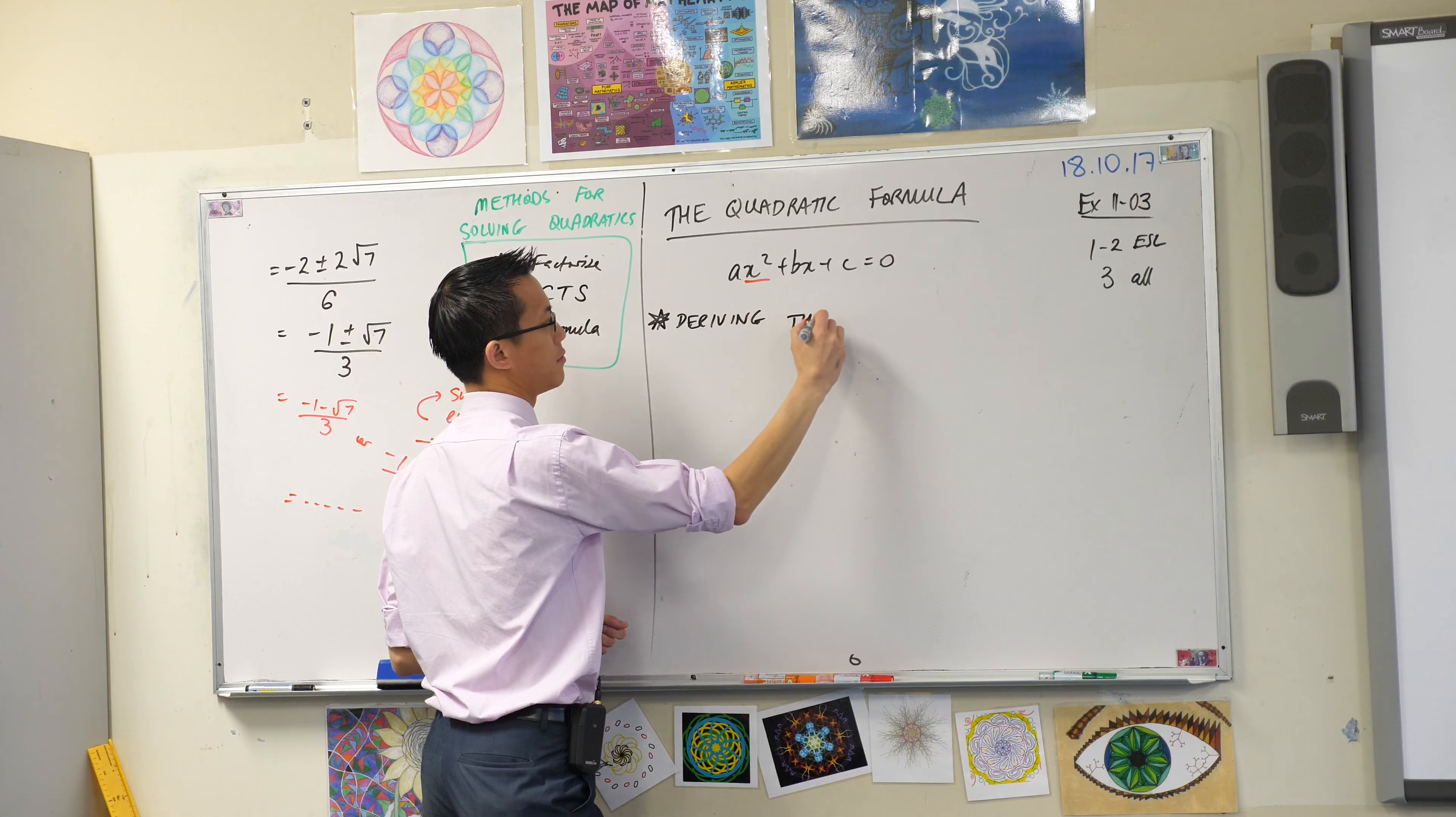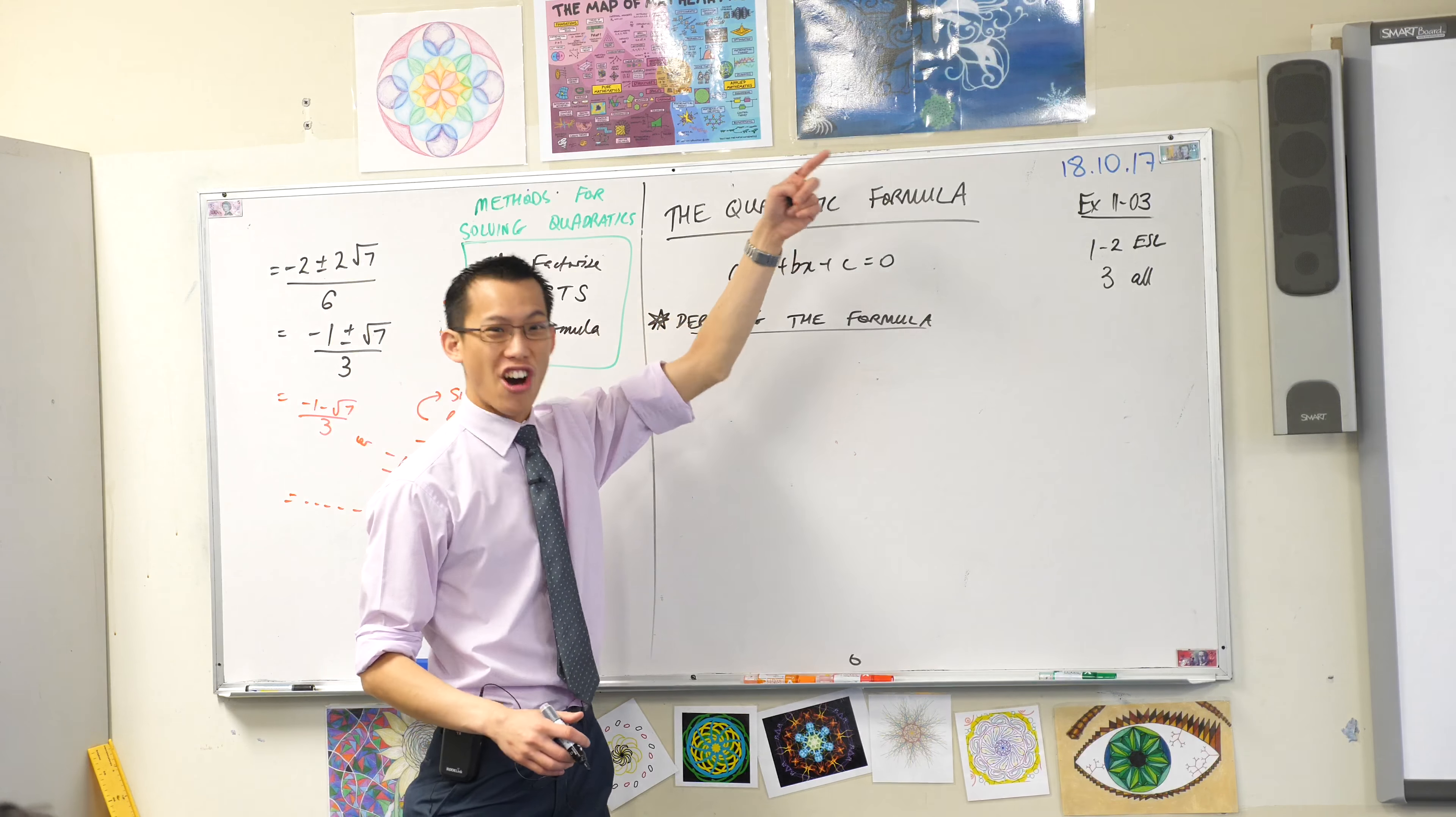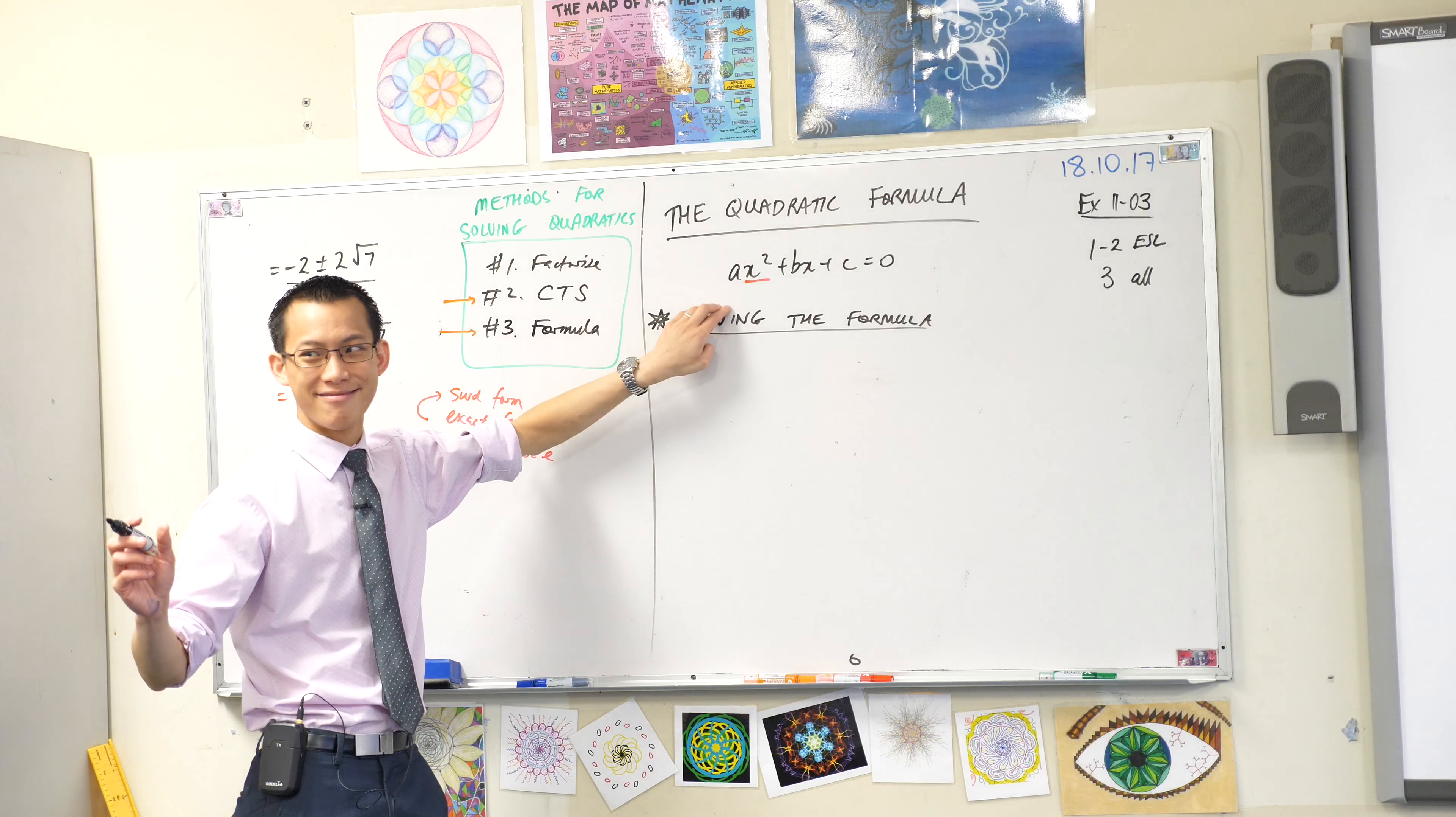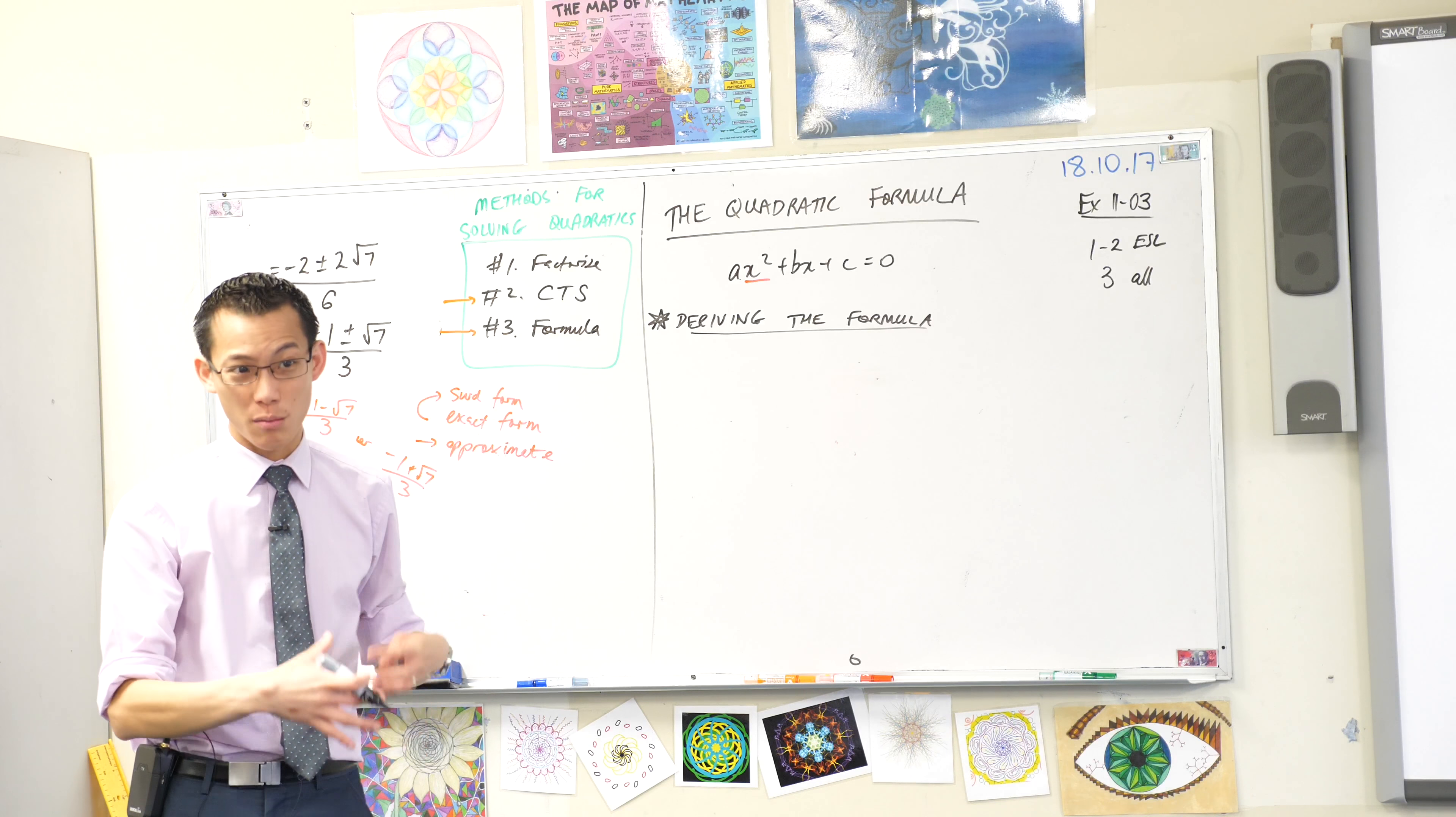So here's my little subheading, deriving the formula. Before I said that the quadratic formula and completing the square are actually very similar to each other. And you can use them in exactly the same cases. Here's why. The quadratic formula comes from completing the square. So what I'm going to do is I'm going to take this ax squared plus bx and I'm going to complete the square on it. But it's not easy. That's why the quadratic formula ends up looking a bit like a mess.